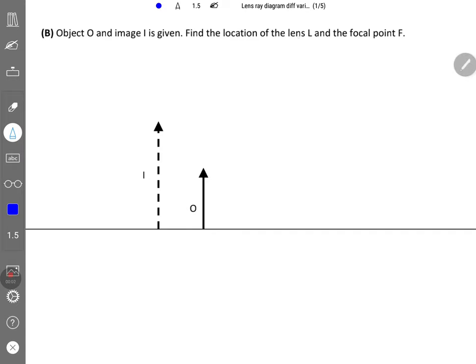In this question, you're supposed to find the position of the lens L and the focal point F when you're given both the object and the virtual image that's upright. From this, you can know that this is actually a magnifying glass. So the first step is to join the tip of the image and the tip of the object.